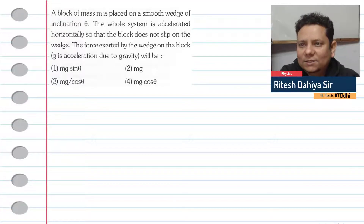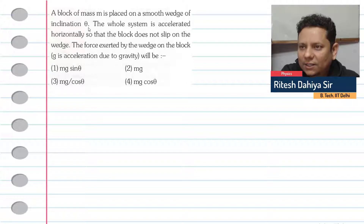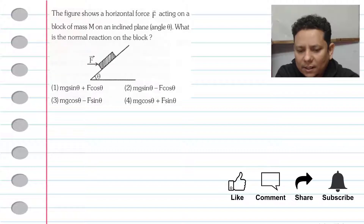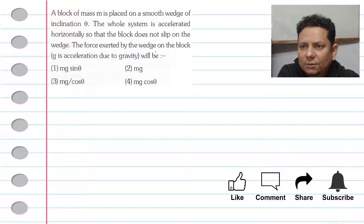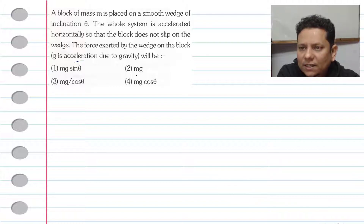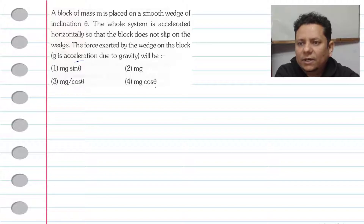A block of mass M is placed on a smooth wedge of inclination theta. The whole system is accelerated horizontally so that the block does not slip on the wedge. The question asks for the force exerted by the wedge on the block, where G is acceleration due to gravity. The options are: Mg sin theta, Mg, Mg divided by cos theta, or Mg cos theta.